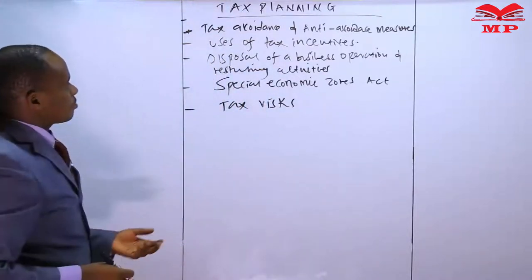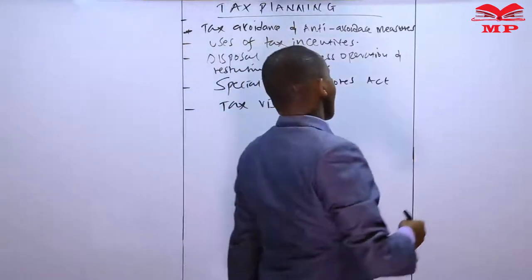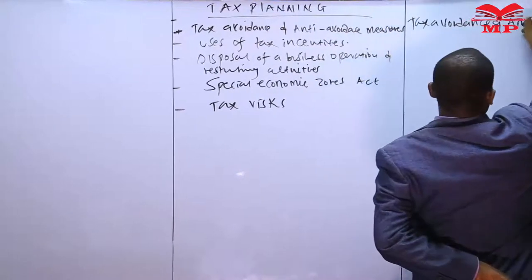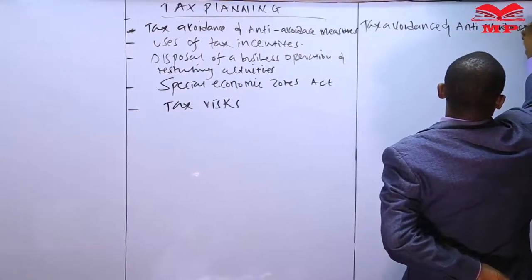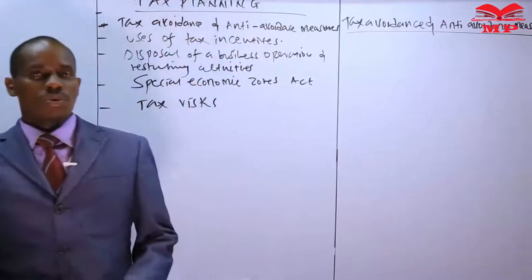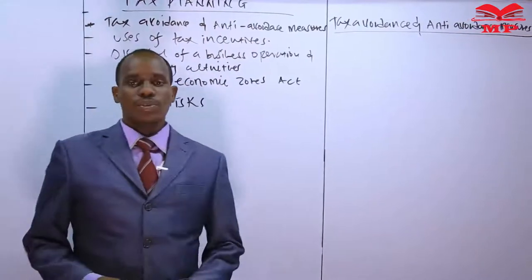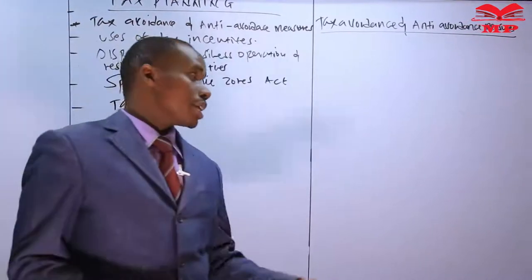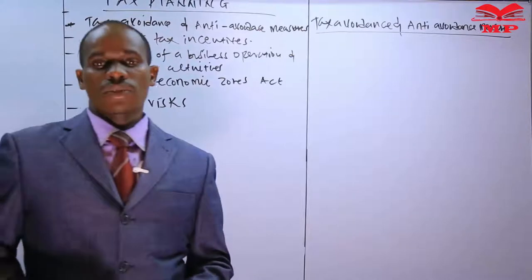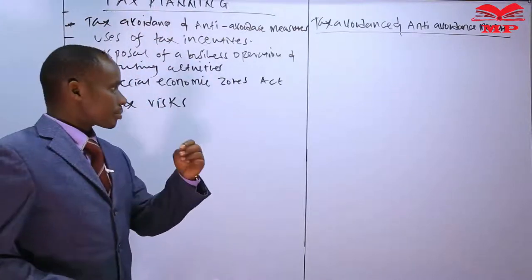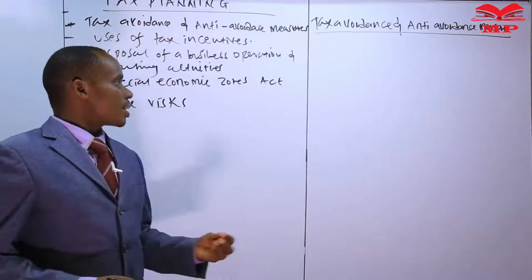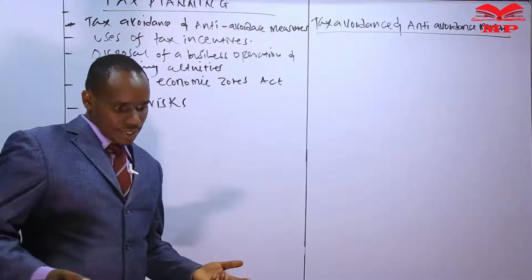Let's start with the first part - tax avoidance and anti-avoidance measures. Tax avoidance is a legal way of reducing the tax burden - a professional way of minimizing the tax burden without violating tax rules and regulations. Therefore, if the taxpayer engages in tax avoidance, he cannot be penalized by KRA because it is a legal practice.